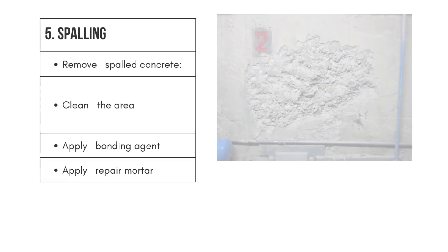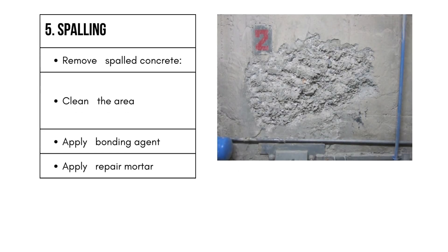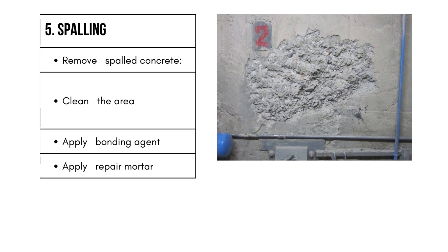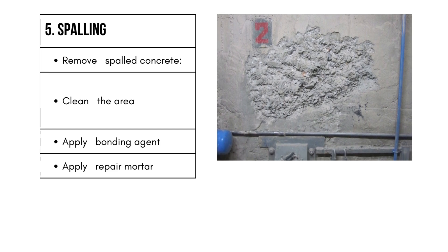5. Addressing Spalling. Remove spalled concrete using a chisel or grinder to remove the damaged material. Clean the area by removing any loose debris and dust. Apply a bonding agent to improve the adhesion of the repair mortar. Fill the spalled area with a suitable repair mortar.